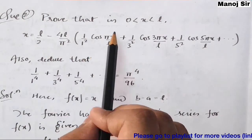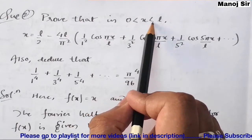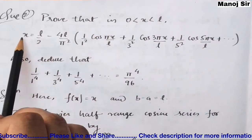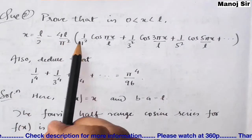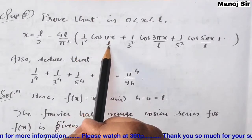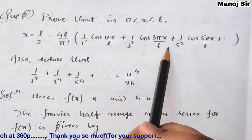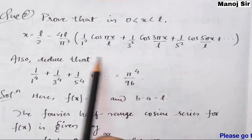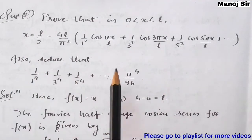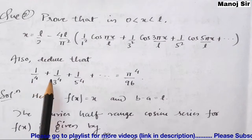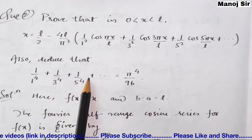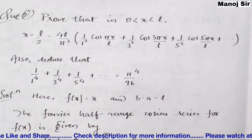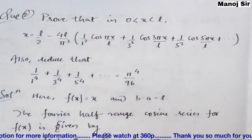The problem says: prove that in the range 0 < x < l, x equals l/2 minus (4l/π²)[1/1² · cos(πx/l) + 1/3² · cos(3πx/l) + 1/5² · cos(5πx/l) + ...]. After proving this, we need to deduce that 1/1⁴ + 1/3⁴ + 1/5⁴ + ... equals π⁴/96.